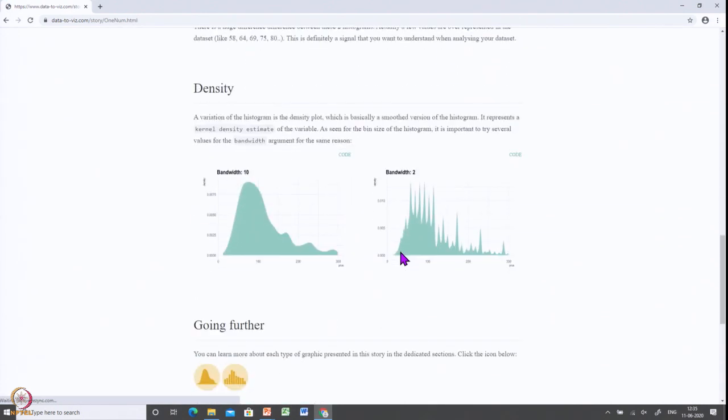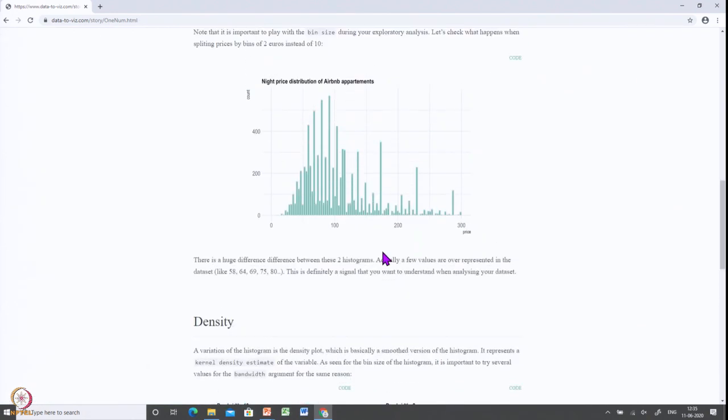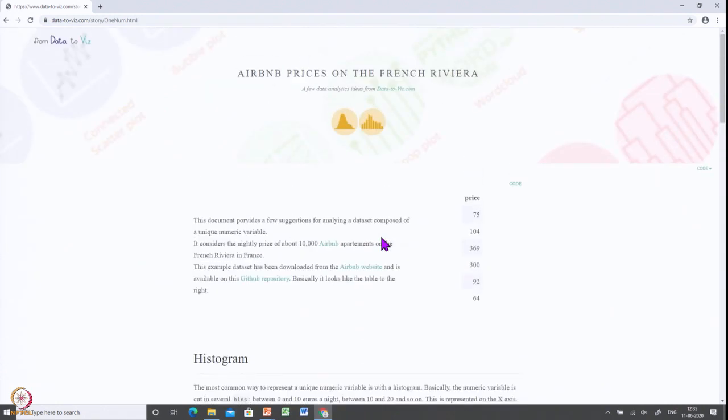How we use the different plots to show the difference between these values and how you are predicting something. So I request you to check this website and understand more about charts and check the scripts if you want to use them. If you do not want to use scripts, fine. At least understand what the chart is about, which data type should be used for which chart and everything.